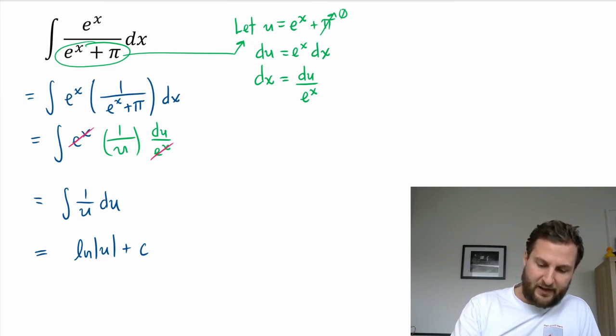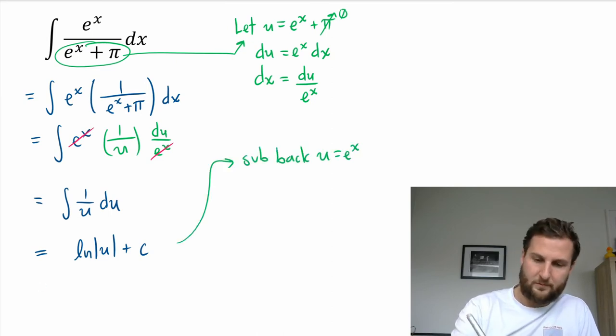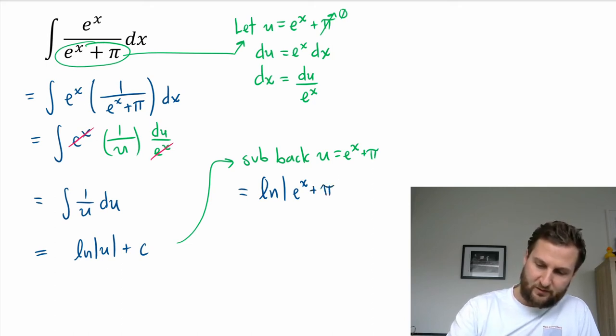And then when I sub back in, I'm going to have natural log - e to the x, oops I forgot my pi - e to the x plus pi, and that's key, I need that plus pi - plus pi, and then plus c.